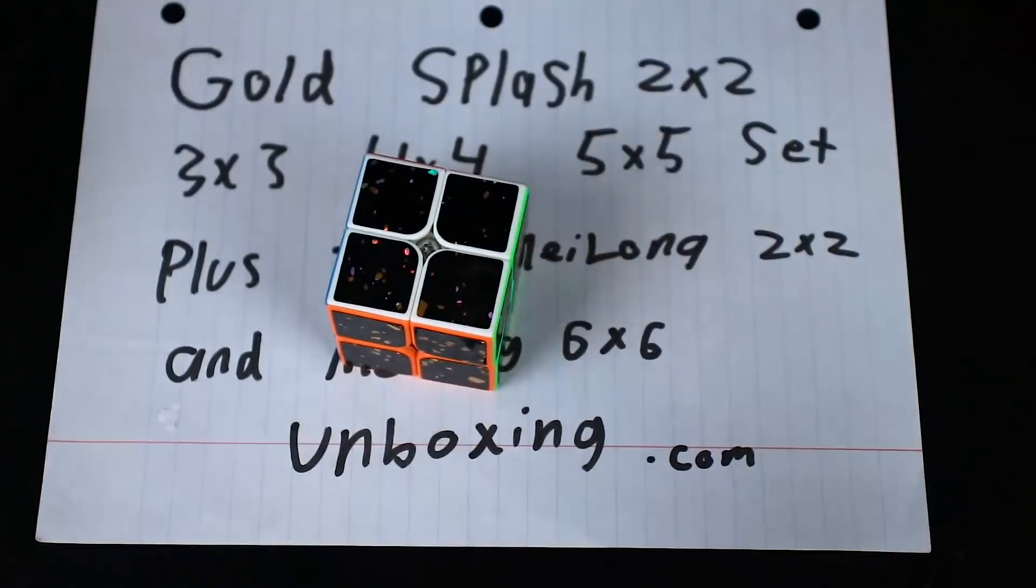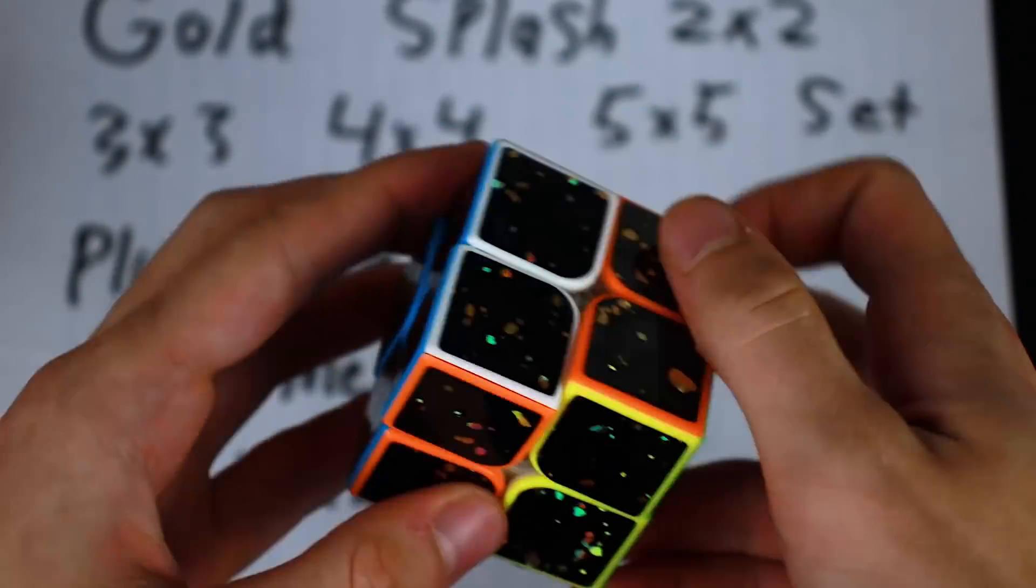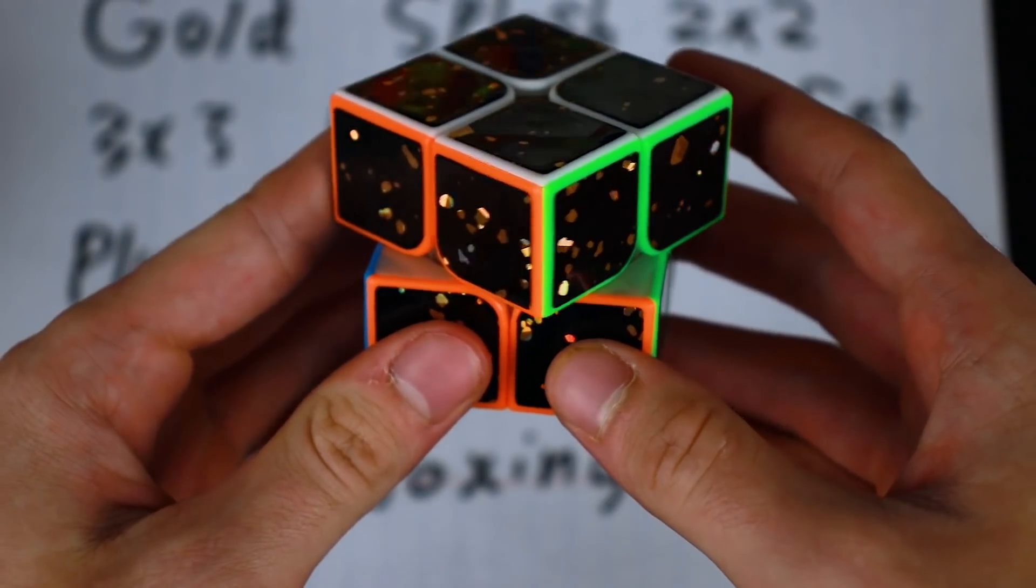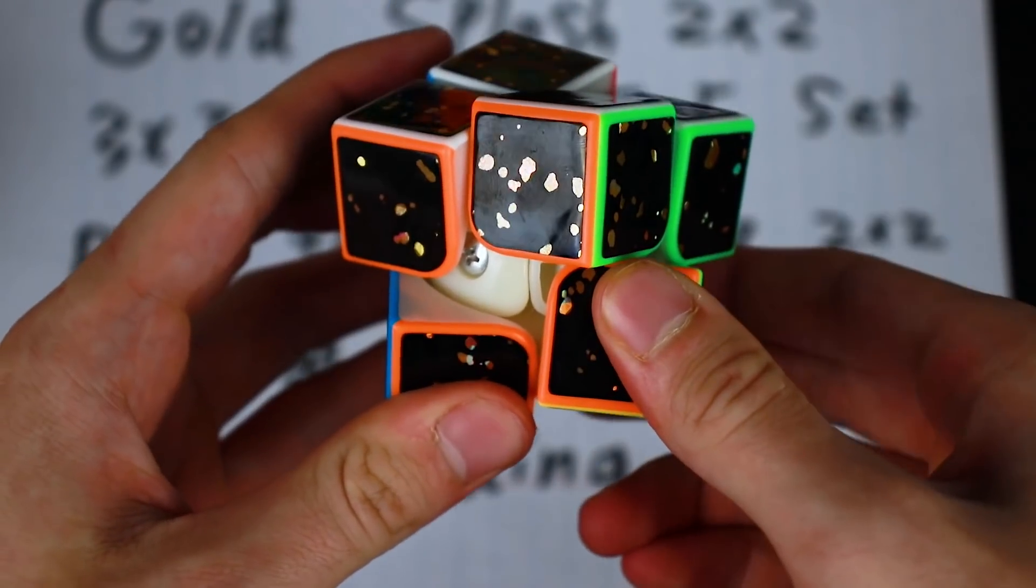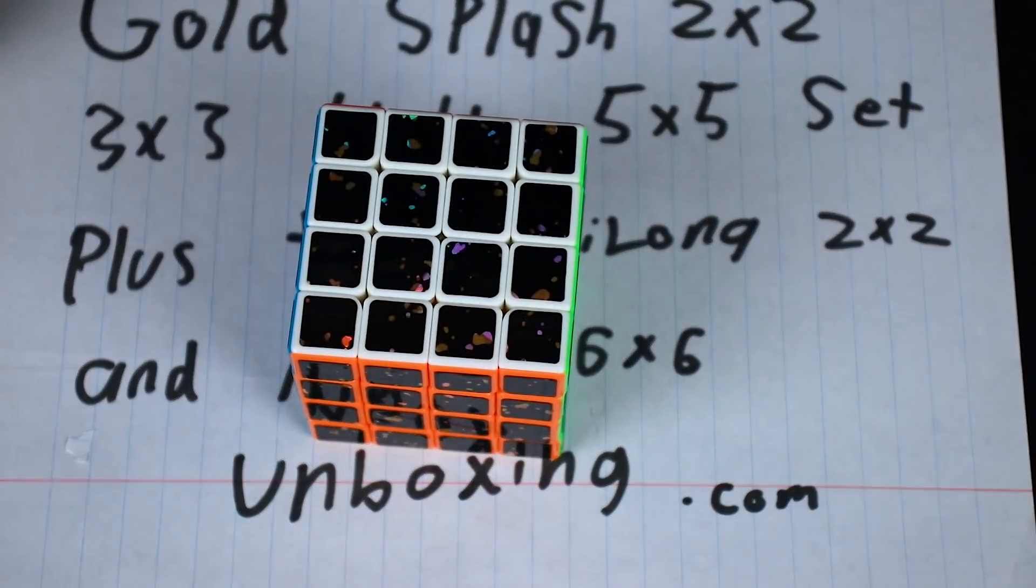Two by two. Okay, that actually turns a little bit better than the three by three. Corner cuts, nope, not quite 45. Almost 45. Yeah, that's actually a pretty good feeling two by two.